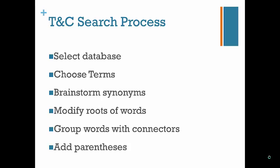Typically, when I conduct a Terms and Connectors search, I go through this process. First, I select a relevant database, such as a case law or law journal database. Then I come up with a short list of terms. Because a Terms and Connectors search won't search for synonyms like Google, I have to brainstorm other ways to phrase my terms. Next, I modify roots of words to account for spelling variations and different parts of speech. From there, I group similar words together and string terms together with connectors. Finally, because each database may have a different order of operations, I group terms together with parentheses.